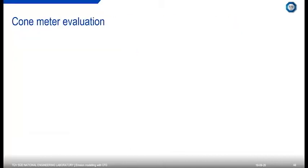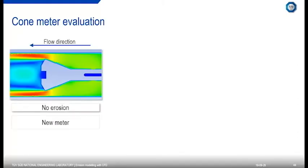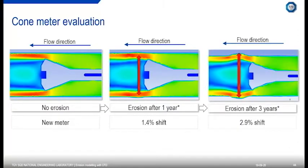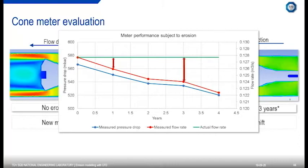Here we have a plot of velocity — the flow is accelerated at the restriction after the cone. This is our new metre with no erosion yet. After one year at a particular flow rate, downstream of the cone metre the actual pipe is becoming larger, resulting in a different downstream pressure, so our differential pressure is changing. After three years it's even larger and we have an even larger shift. We plot the actual flow rate in green as constant, and the measured flow rate based on the measured pressure drop changes over time — this shows how much of a shift is impacting the measurement, and when we might need to recalibrate the metre.